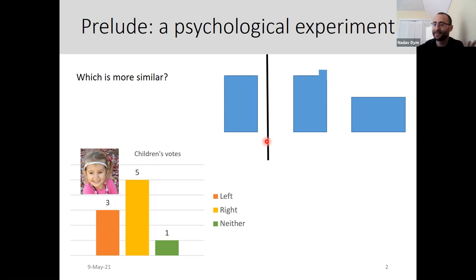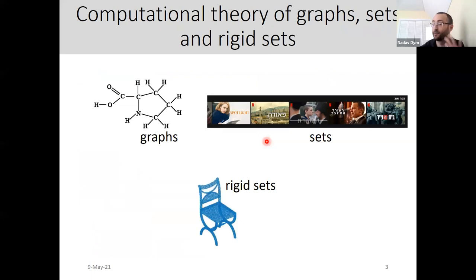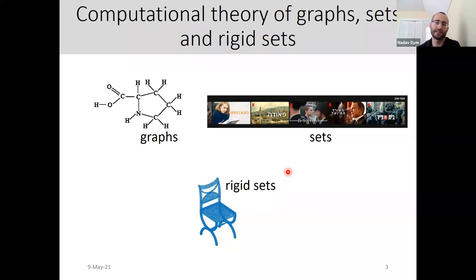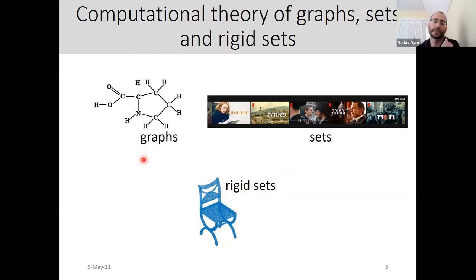What I really want to talk about is data with symmetries, and specifically graphs, sets, and rigid sets. Graphs and sets are the same graphs and sets we all know and love, and rigid sets are a little bit different. I'll explain exactly how I set these things as objects with symmetries — they're going to be Euclidean objects with some symmetries. A graph is an n-by-n matrix with permutation symmetries.